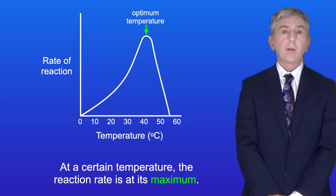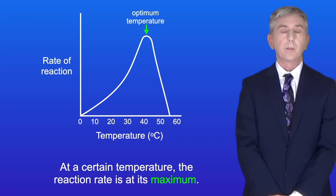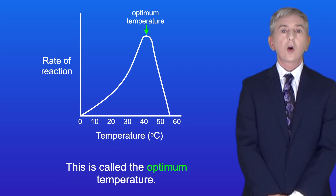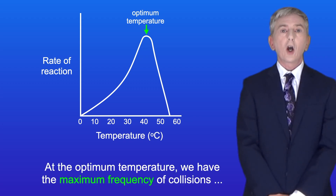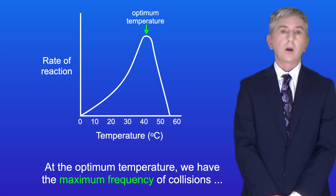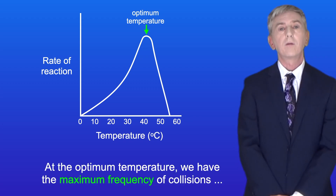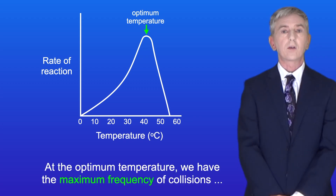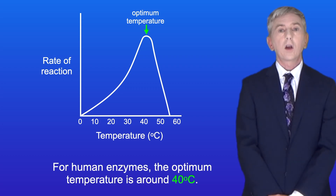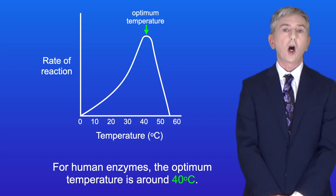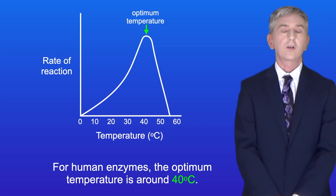At a certain temperature, the reaction rate is at its maximum. This is called the optimum temperature. At the optimum temperature, we have the maximum frequency of collisions between the substrate and the active site. For human enzymes, the optimum temperature is around 40 degrees Celsius.